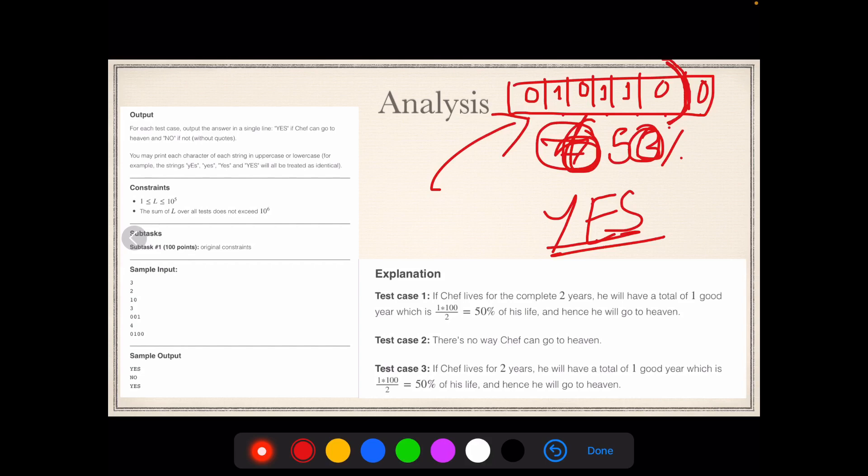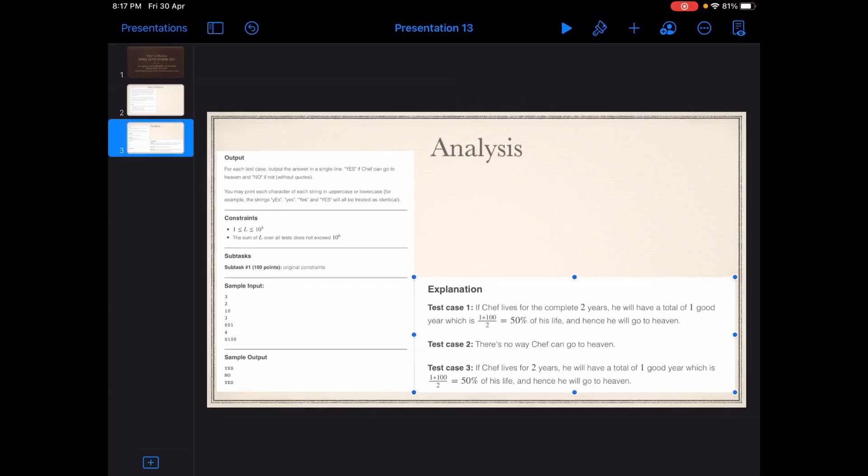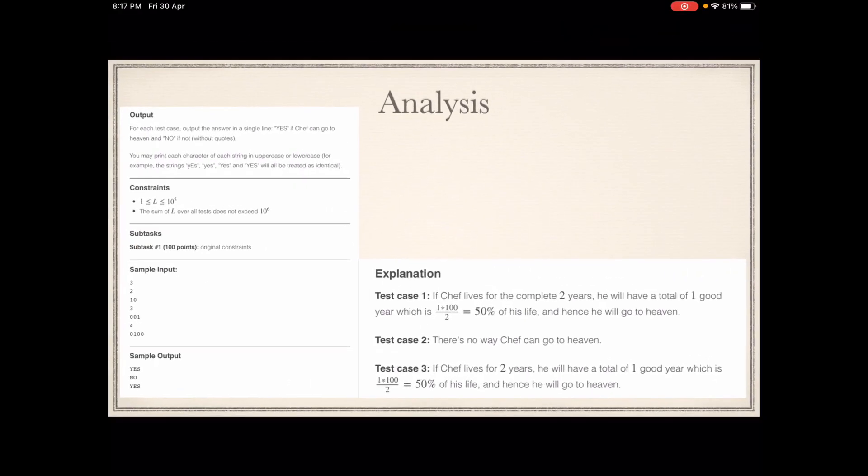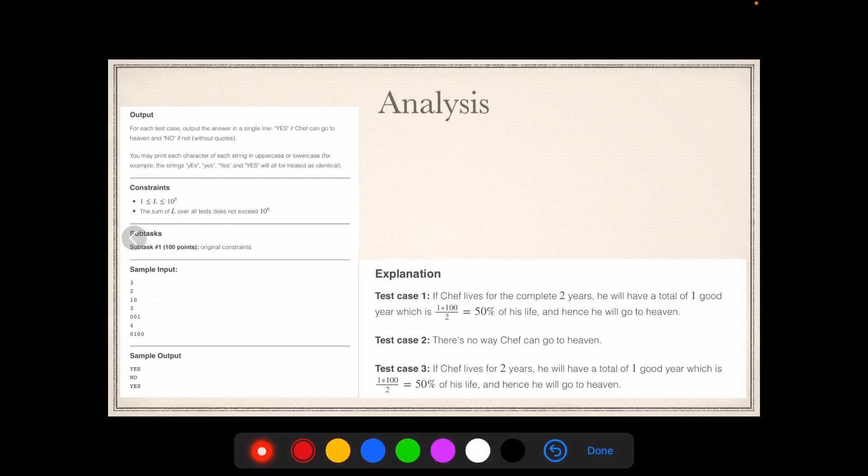Let us take another test case. Another test case would be something like zero, zero, zero, zero, zero, one. Now you can only reduce the string from this side and not from the front. In this you clearly see that you have done just one good deed in a total of five.